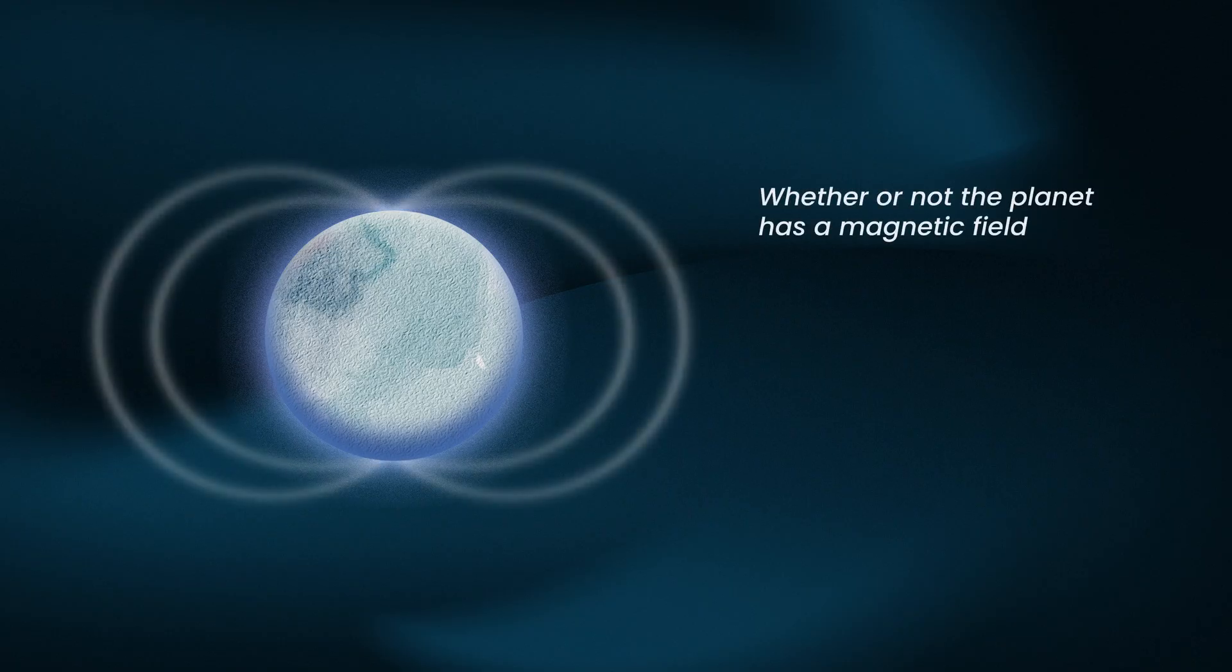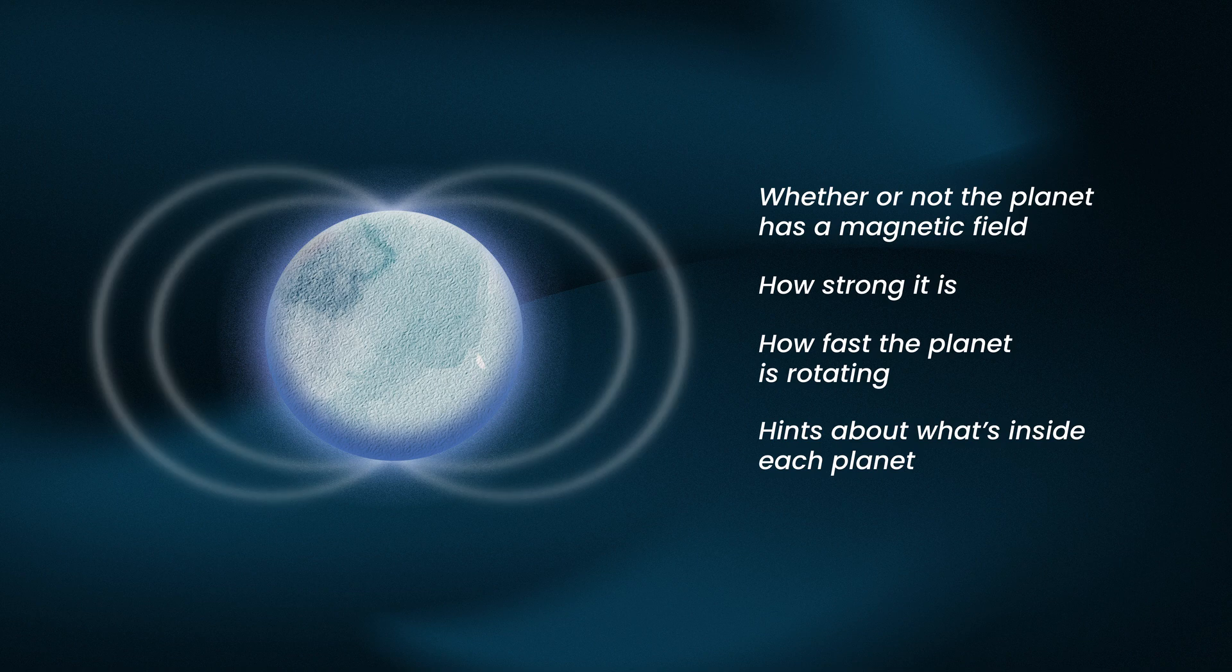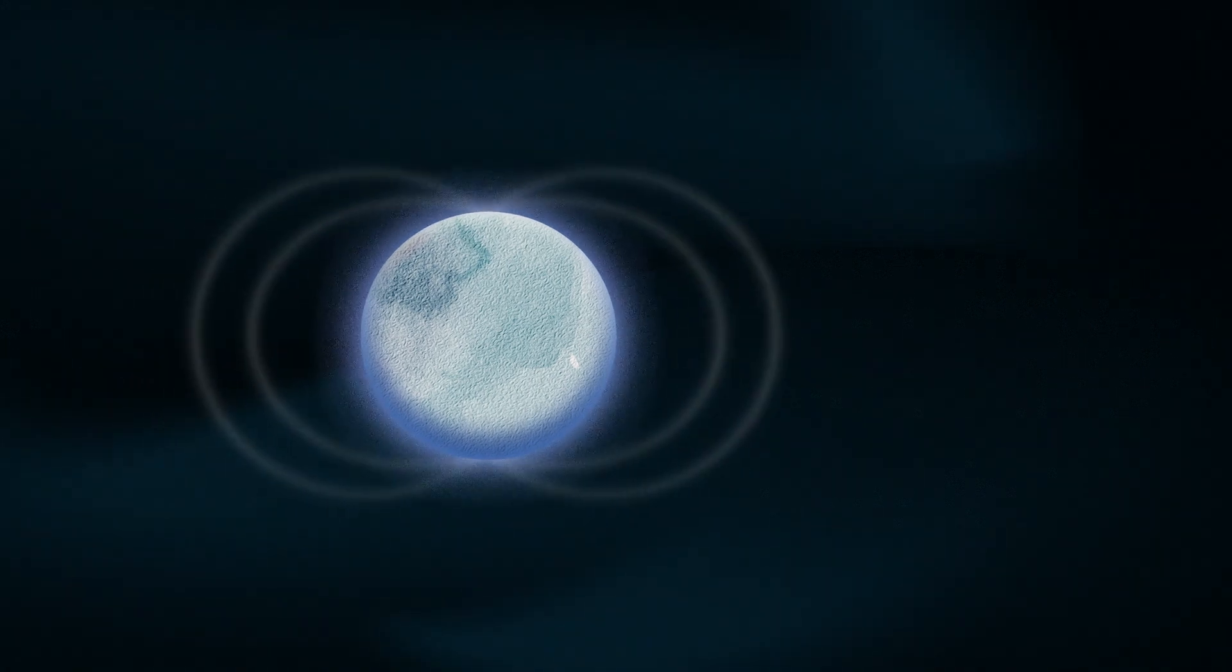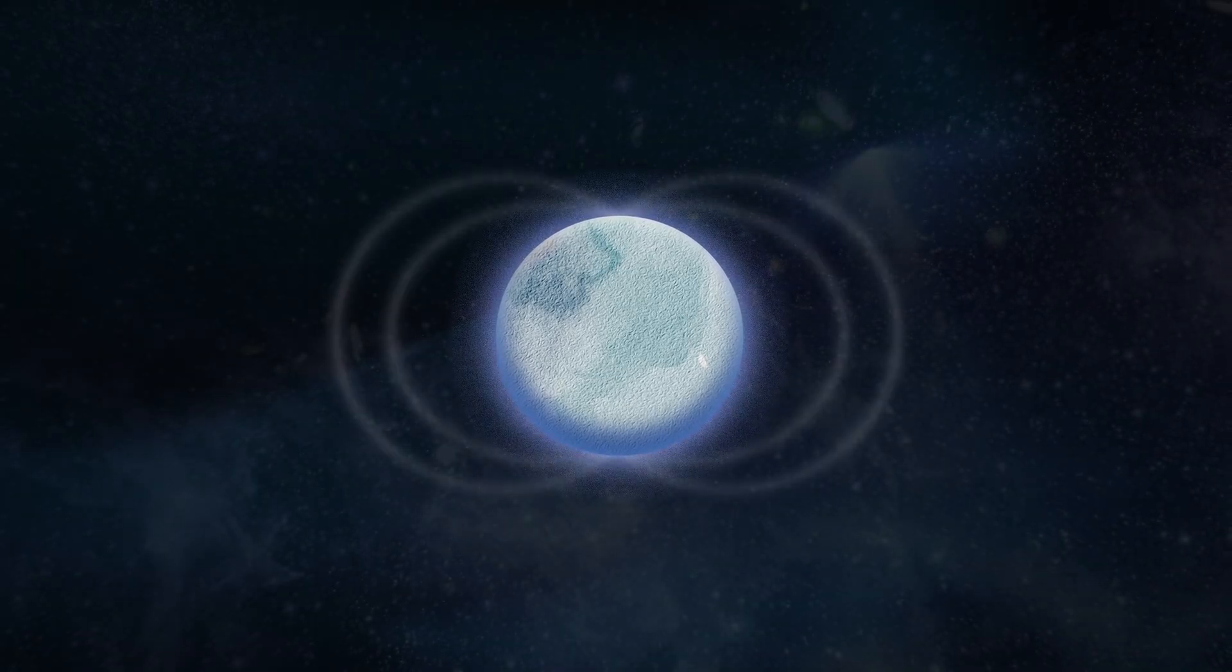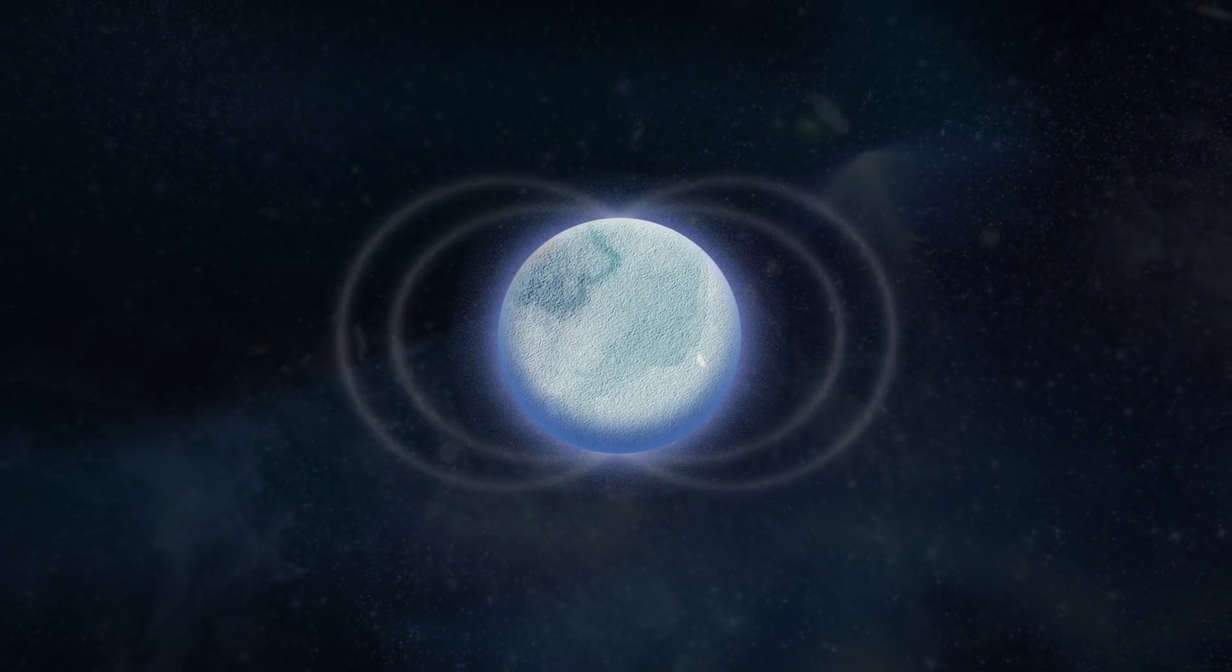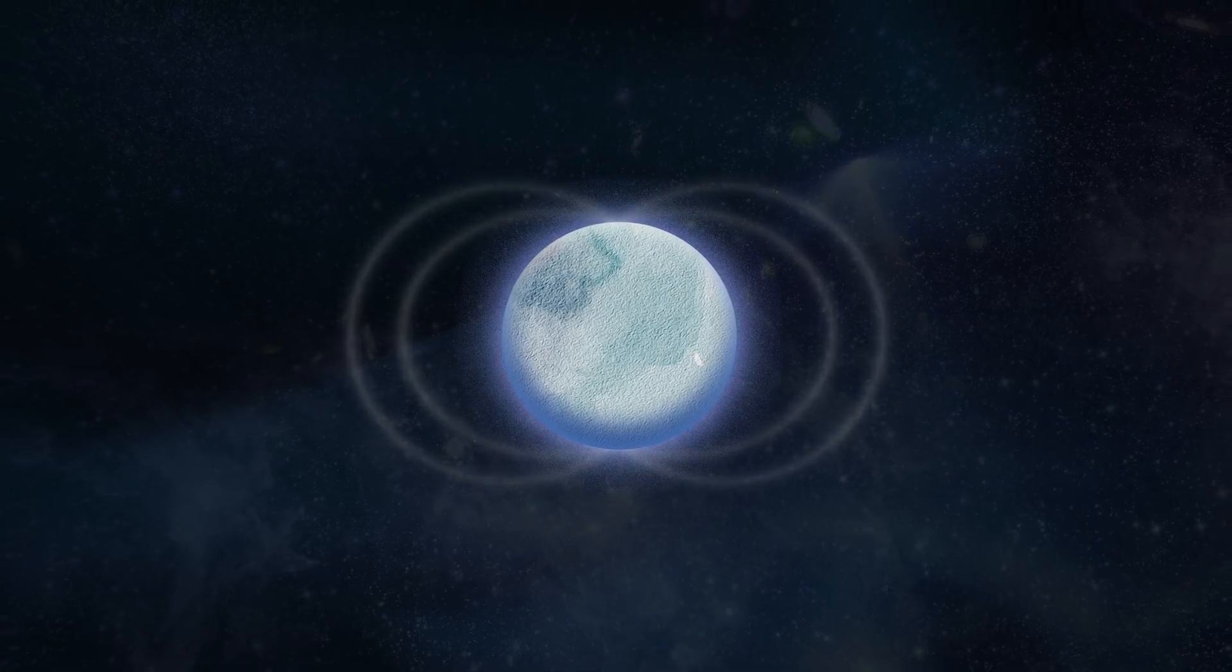Whether or not the planet has a magnetic field, how strong it is, how fast the planet is rotating, and even hints about what's inside each planet. Studying exoplanet radio aurora and the magnetic fields that they trace is an important piece of the habitability puzzle, and it's a key science goal for GOLO.